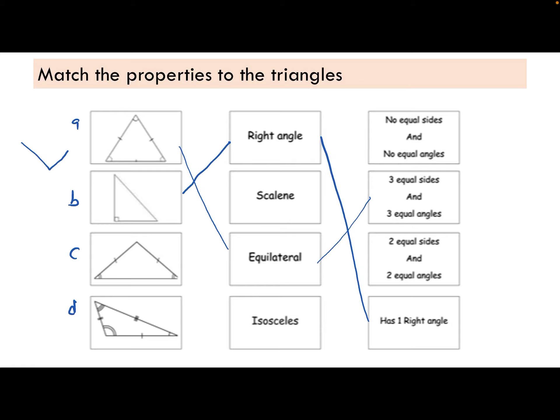Interestingly, a scalene, you can get scalene right angle triangles and isosceles right angle triangles. We have an isosceles triangle because this one and this one are the same length. We know they're the same length because of the lines. It's got one line. This has got one line on each. It means they're all the same.